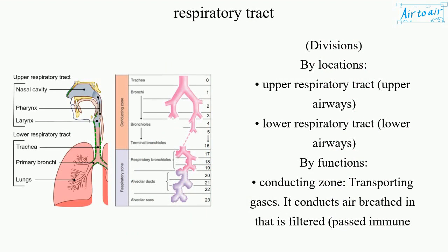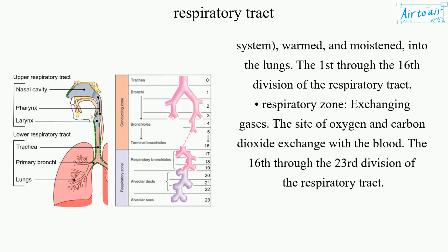By functions: Conducting zone — transporting gases. It conducts air breathed in that is filtered, past the immune system, warmed, and moistened, into the lungs. This covers the first through the sixteenth division of the respiratory tract.